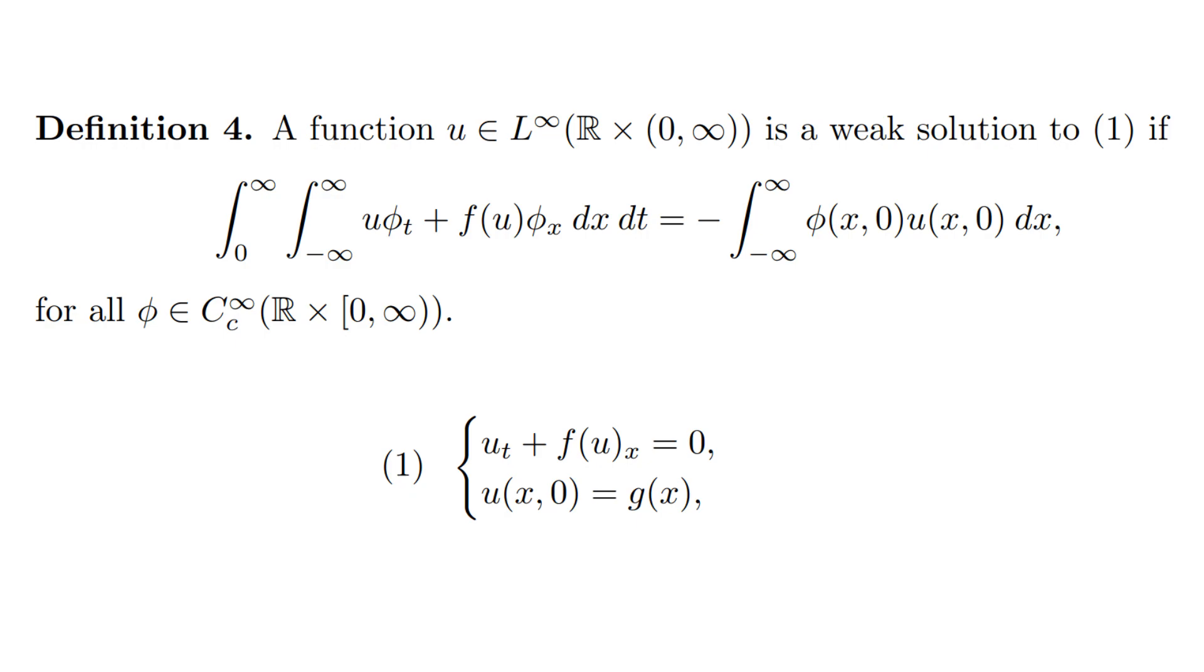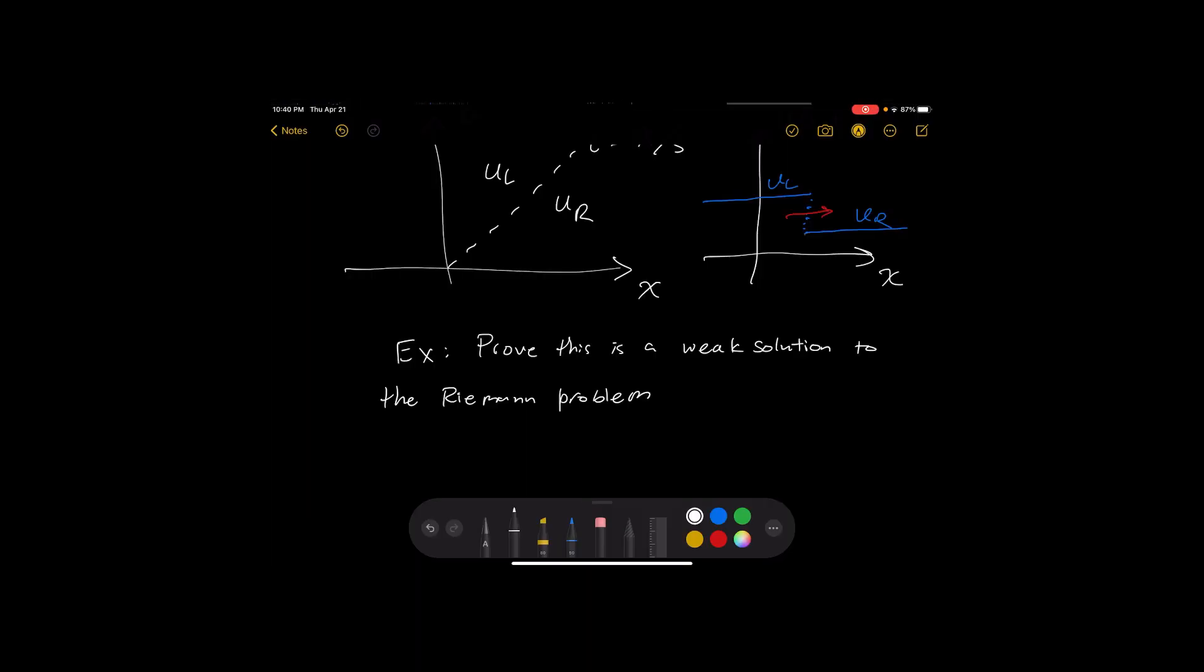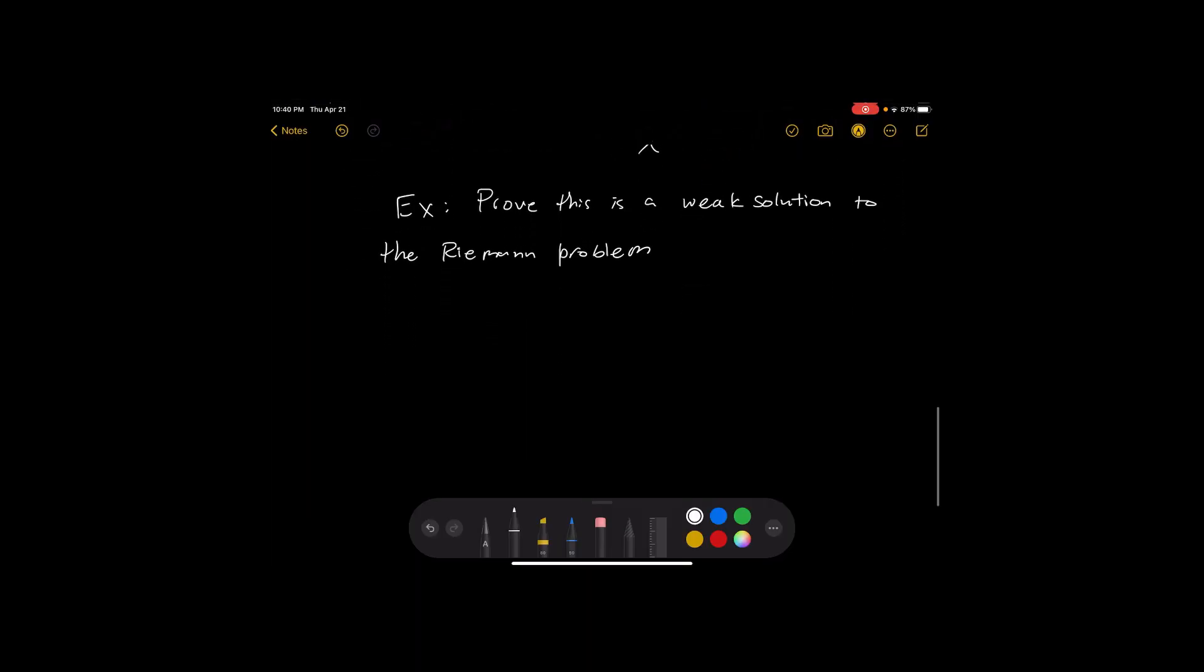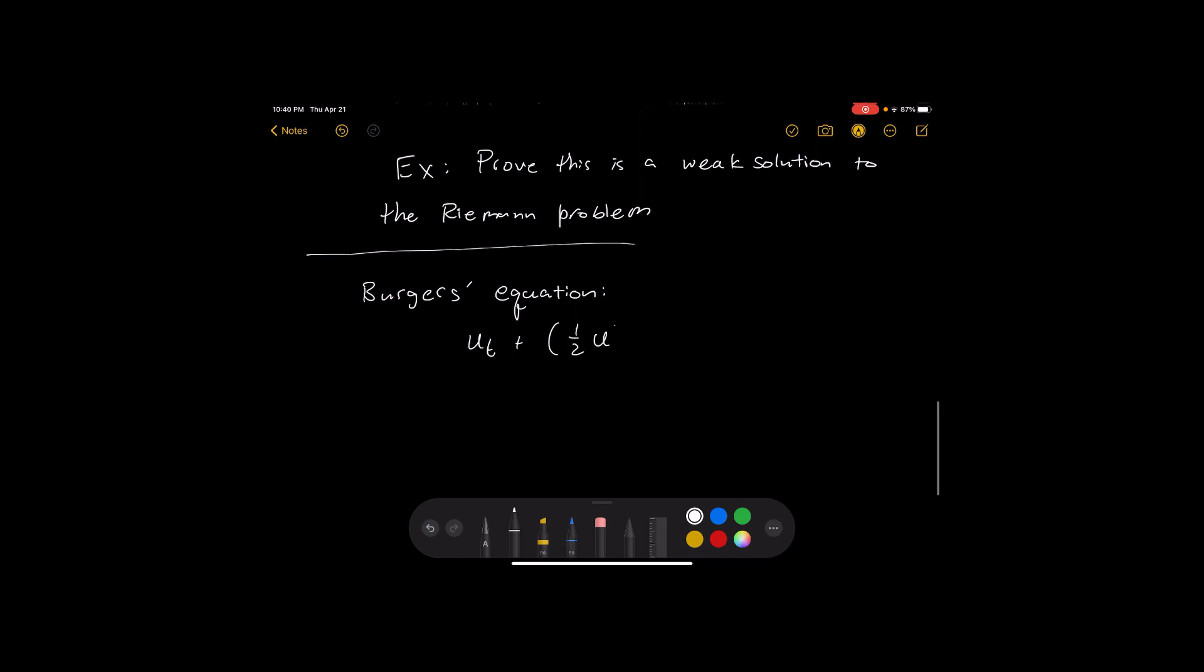Okay, so we're just going to move on from this and we're going to look at a specific example. So of course we're going to go with our favorite equation, the Burgers equation. This is u_t plus the flux one half u squared spatial derivative equal to zero.